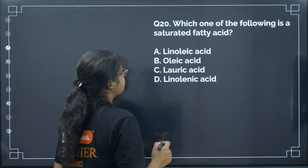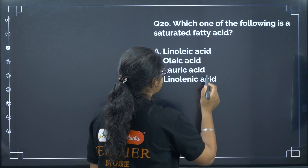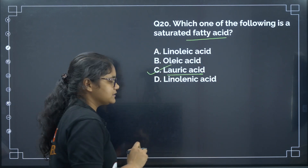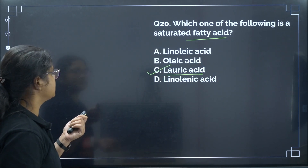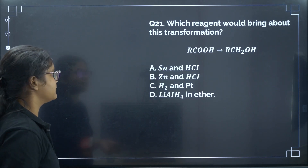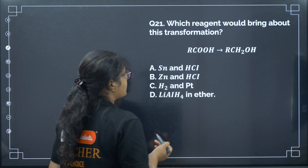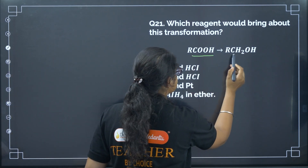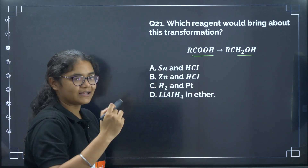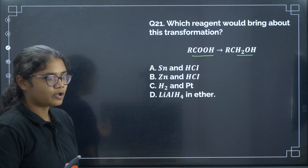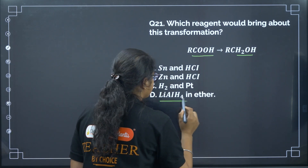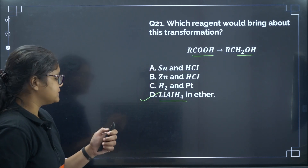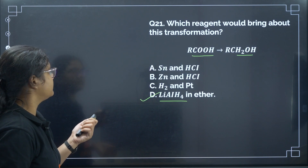Next: which of the following is a saturated fatty acid? Lauric acid is a saturated fatty acid. Correct answer: option C. Next: which reagent brings about the transformation RCOOH → RCH2OH? Converting an acid to an alcohol requires a very strong reducing agent — lithium aluminum hydride (LiAlH4). Correct answer: option D.